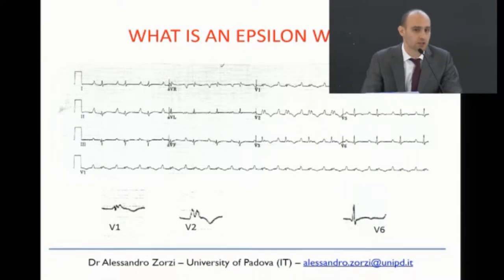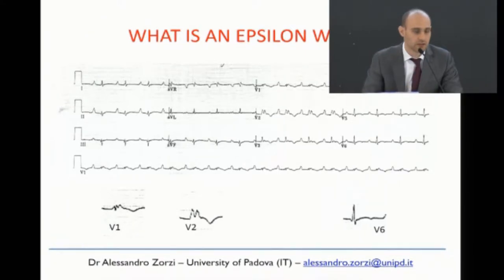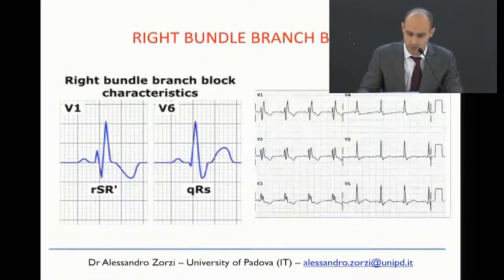Another ECG feature is the epsilon wave — a fragmented QRS complex in the leads exploring the right ventricle — but you will not commonly encounter this in clinical practice because it is a sign of very advanced disease. It is observed only in a minority of cases and is not easy to recognize.